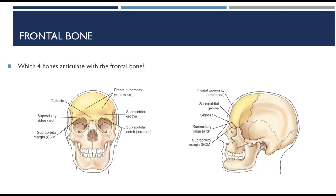The orbital or horizontal portion forms the superior part of the orbit. It consists of the supraorbital margin, supraciliary ridges, the glabella, and the frontal tuberosities. The orbital plate bilaterally forms each superior part of each orbit, and each orbital notch is separated by the ethmoid notch.